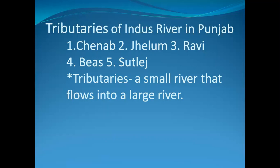The tributaries of the Indus river are Chenab, Jhelam, Ravi, Beas and Satlaj. A tributary is a small river that flows into a large river — the smaller ones join the larger river. The word Punjab is a compound of two Persian words: Panj, meaning five, and Ab, meaning water, thus signifying the land of five waters or rivers.